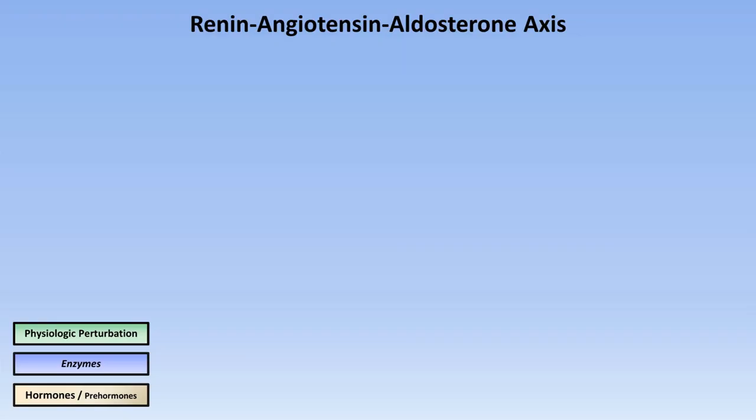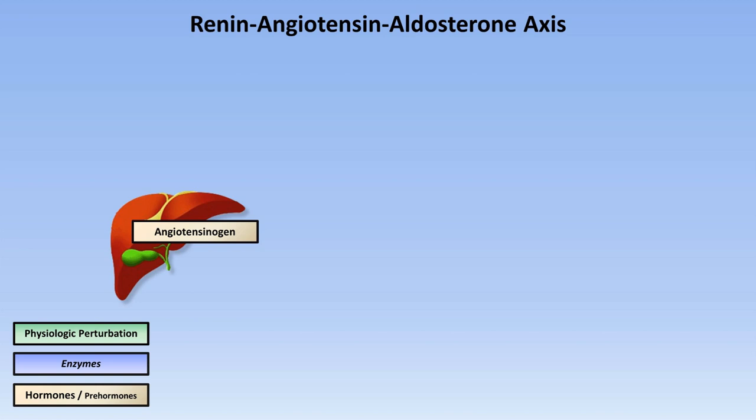The renin-angiotensin-aldosterone axis begins in the liver with a constitutive production and release of a pre-hormone or hormone precursor called angiotensinogen. Angiotensinogen is converted in the circulation to another pre-hormone called angiotensin-1. This reaction is catalyzed by the enzyme renin, which itself is secreted into the circulation by the kidneys in response to various stimuli, most notably decreased blood pressure in the arteries that supply the kidney.